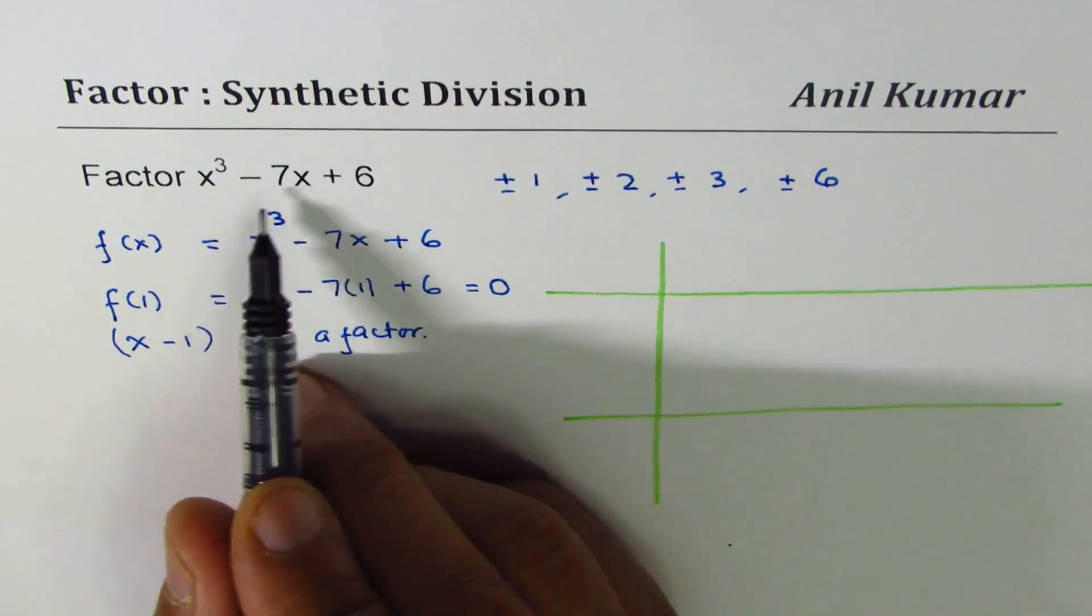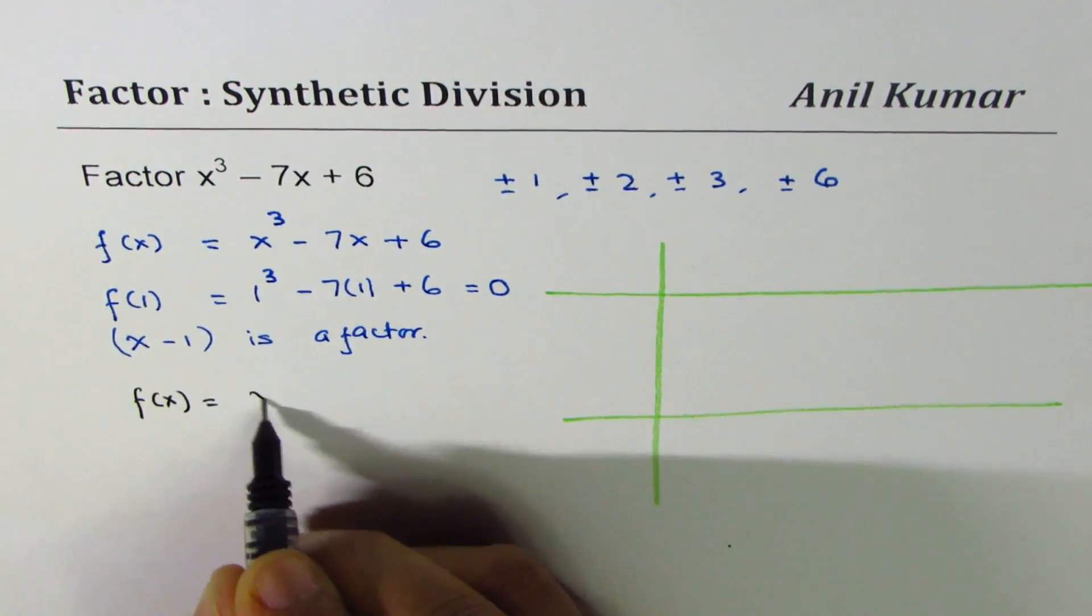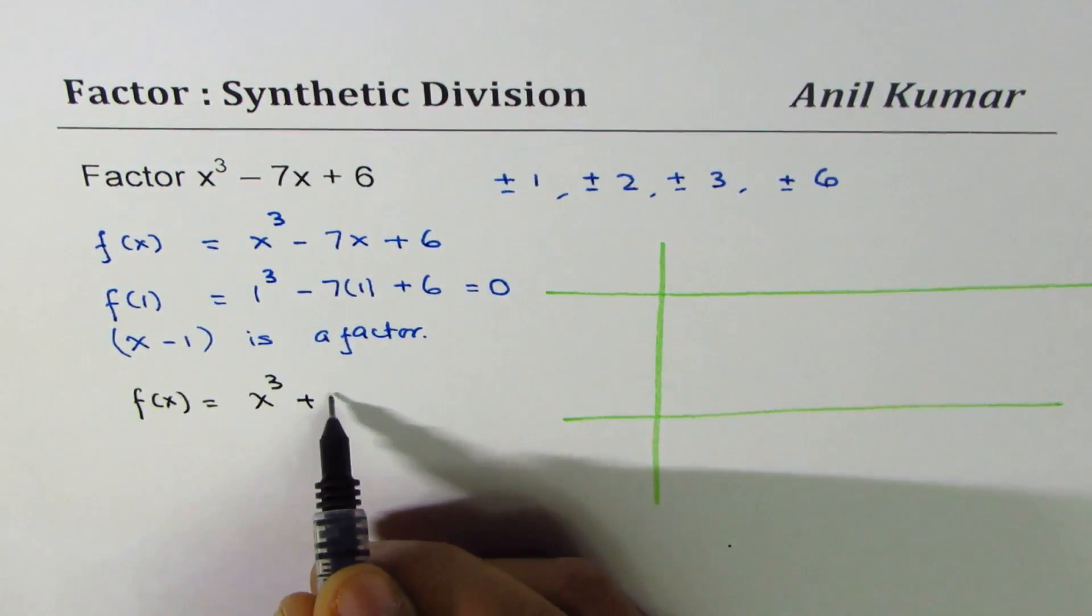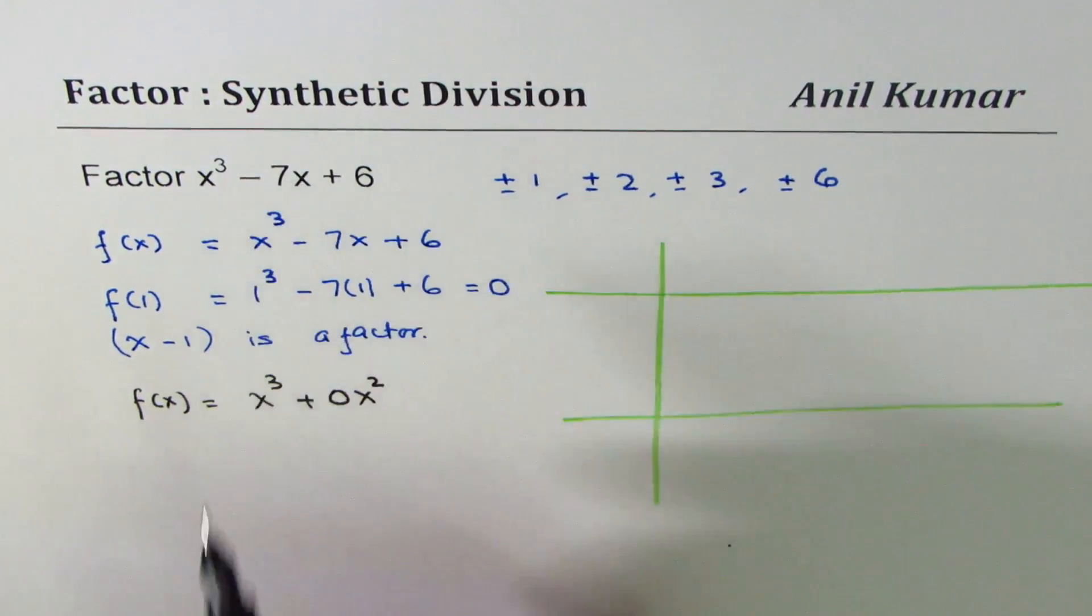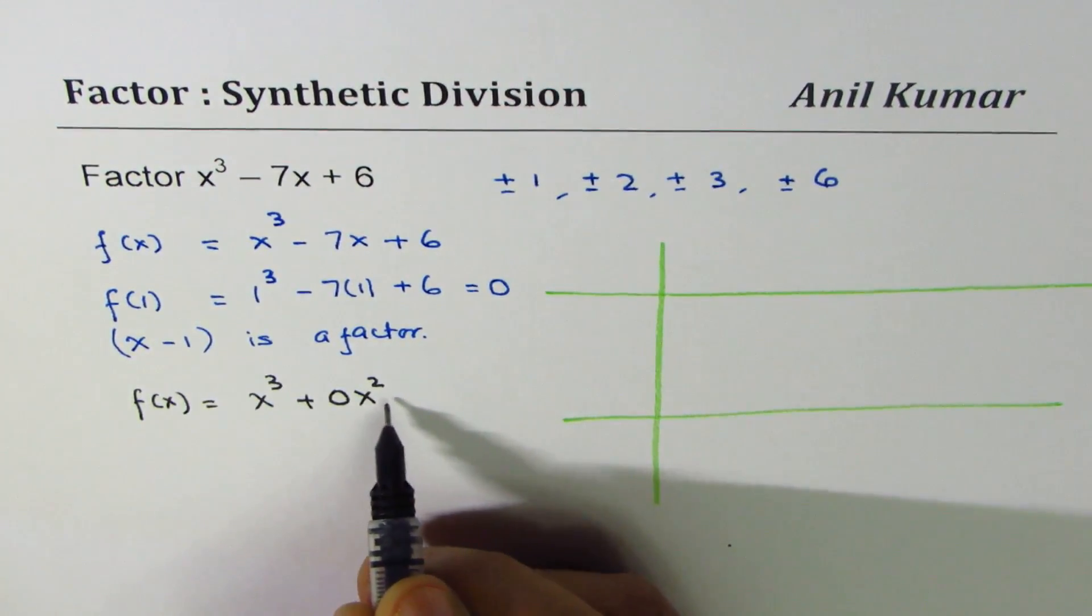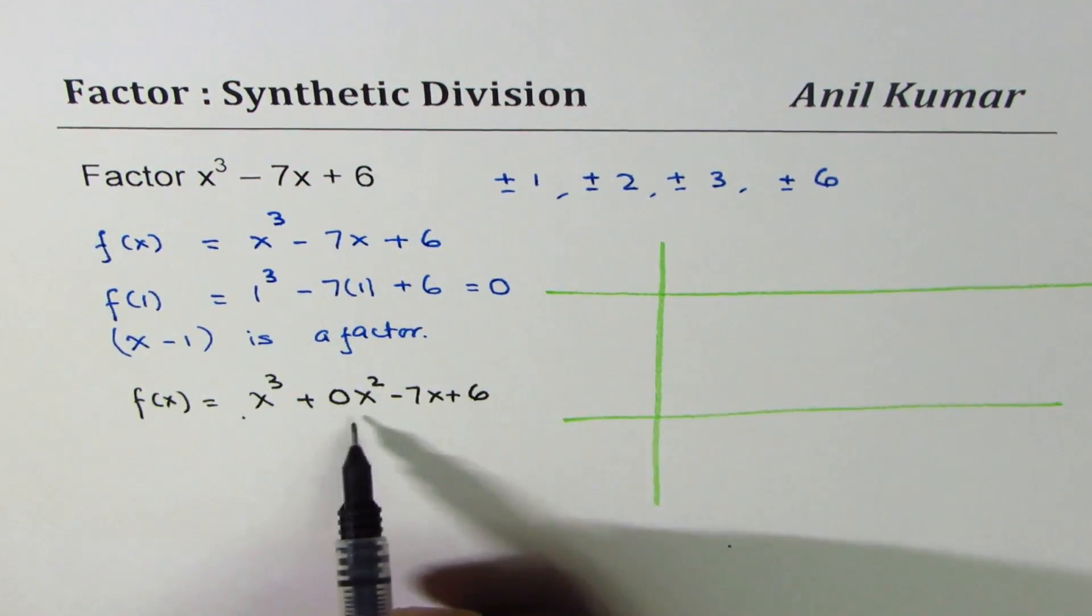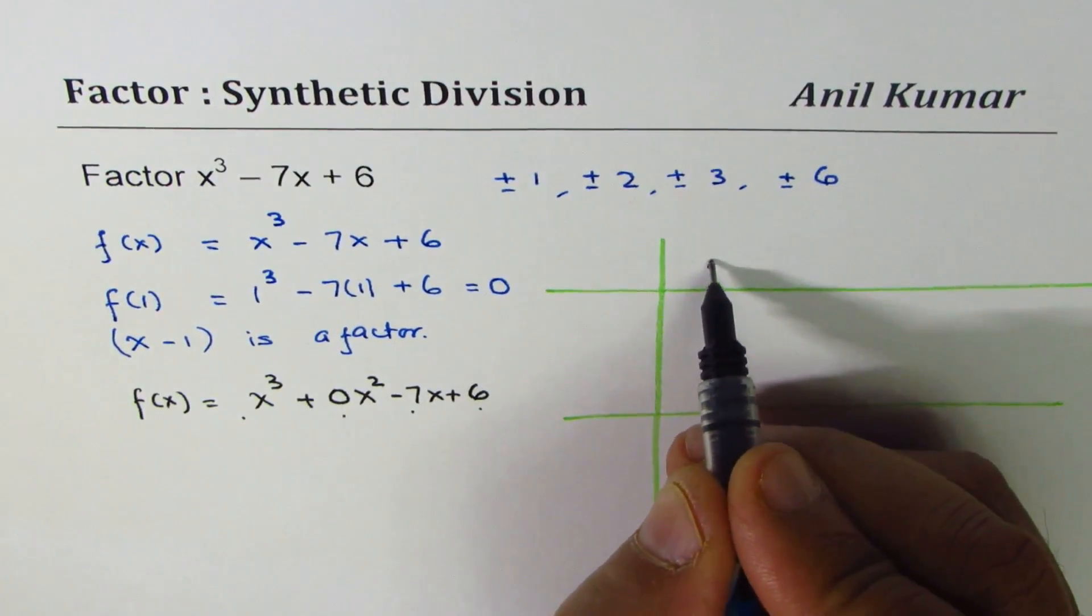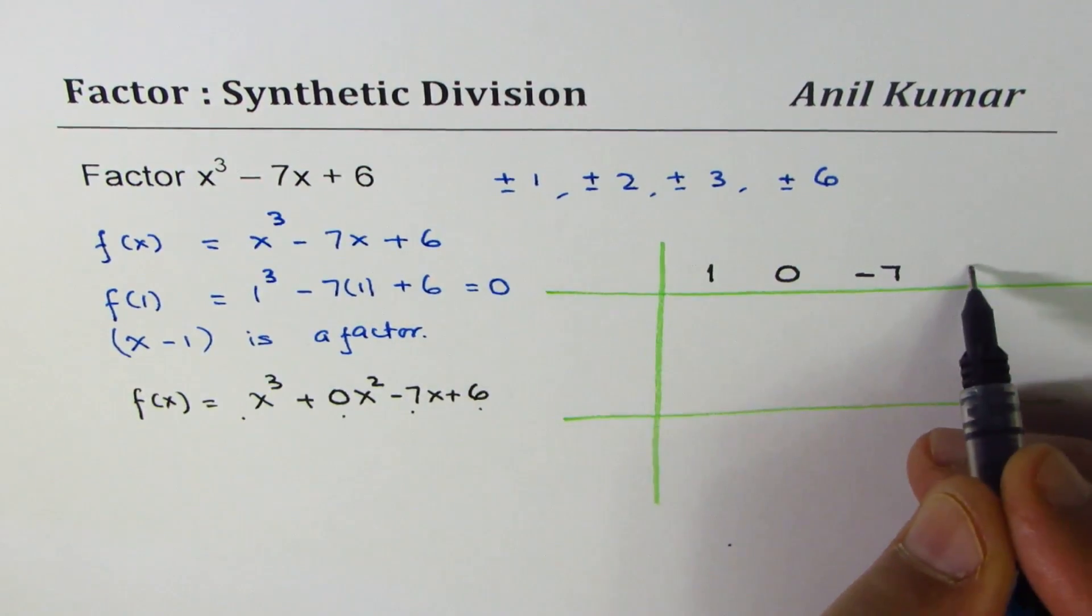One coefficient is missing here. x³, think like this. Let me rewrite the function. It is x³. The x² term is missing. So we do a placeholder with 0x². That really doesn't change the equation, but helps to correctly place all the numbers. Then we have -7x + 6. So the coefficients are 1, 0, -7, and constant 6.